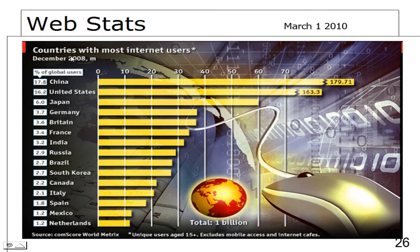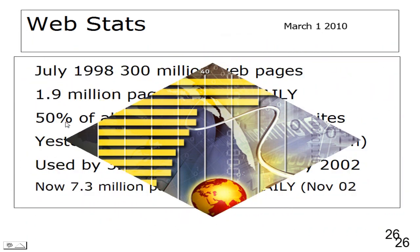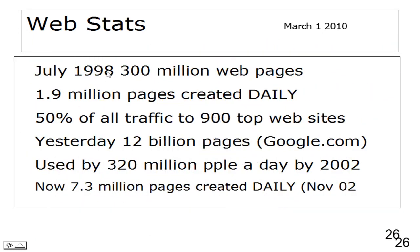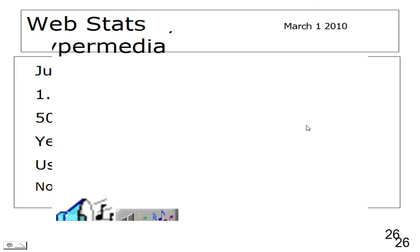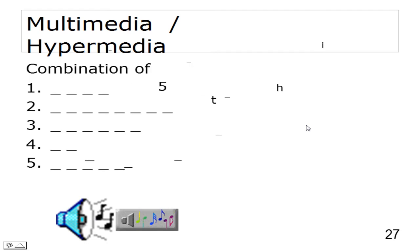Web statistics: countries with the most internet users - China, United States, Japan, Germany, Britain. As of March 1st 2010, 1.9 million web pages are created daily. 50% of all traffic goes to the top websites.